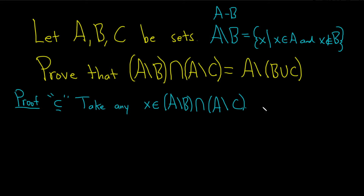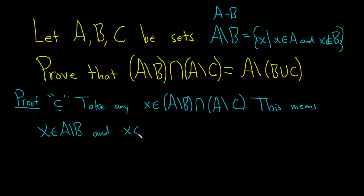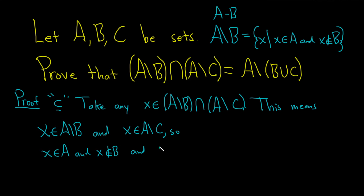We can now write down what it means to be in the intersection. This means that x is in A set minus B and x is in A set minus C. So this means x is in A and x is not in B, and then x is in A and x is not in C. It's just a string of ands.